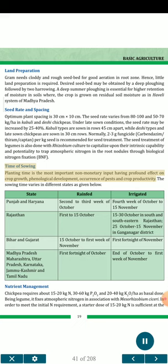Time of sowing: Planting time is the most important non-monetary input having profound effect on crop growth, phenological development, occurrence of pests and crop productivity. The sowing time varies by state: Punjab and Haryana — 2nd to 3rd week of October (rainfed), 4th week of October to 15th November (irrigated); Rajasthan — 1st to 15th October; Bihar and Gujarat — 15th October to 1st week of November; Madhya Pradesh, Maharashtra, Uttar Pradesh, Karnataka, Jammu & Kashmir and Tamil Nadu — 1st fortnight of October to end of October or 1st week of November.